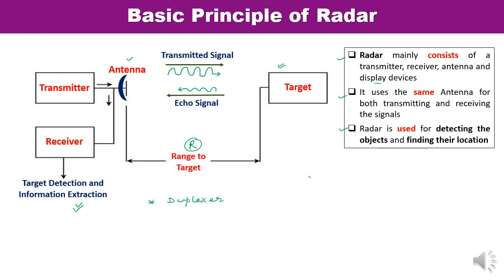Sometimes you may find two different terms for radar systems. One is monostatic radar, and the second is bistatic radar. Monostatic radar uses the same antenna for both transmission and reception. Bistatic radar uses two different antennas — one for transmission and one for reception. In most cases, we will be talking about a single antenna system, meaning we are discussing monostatic radar systems.